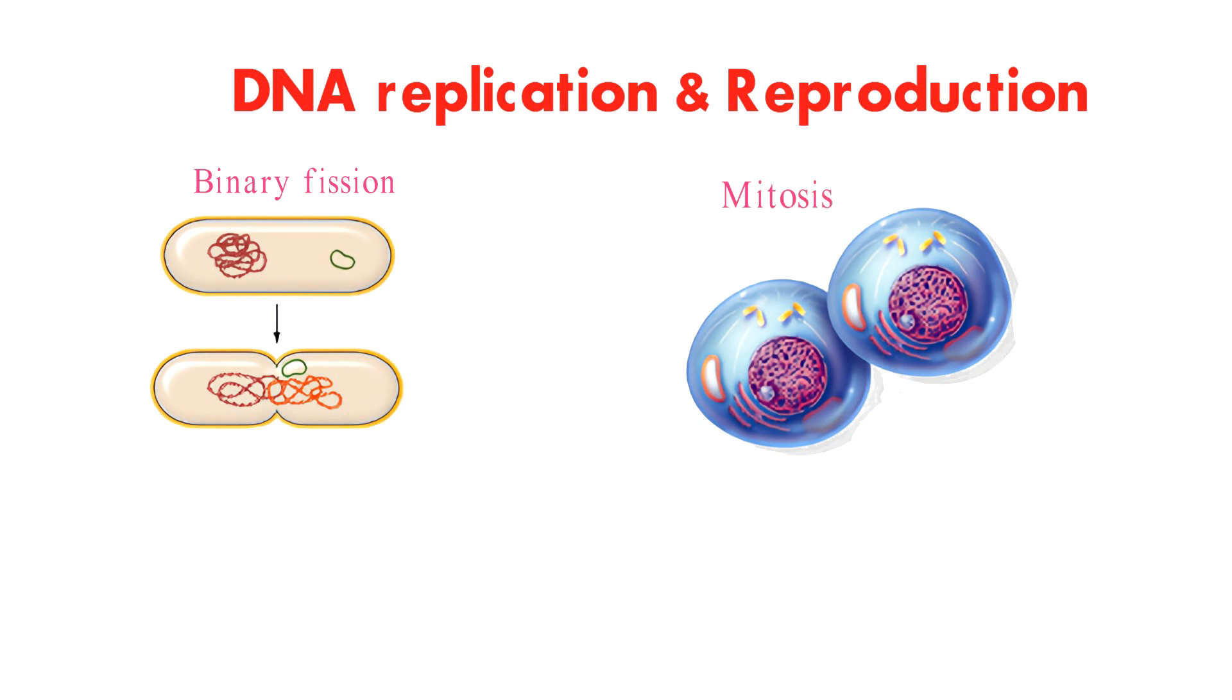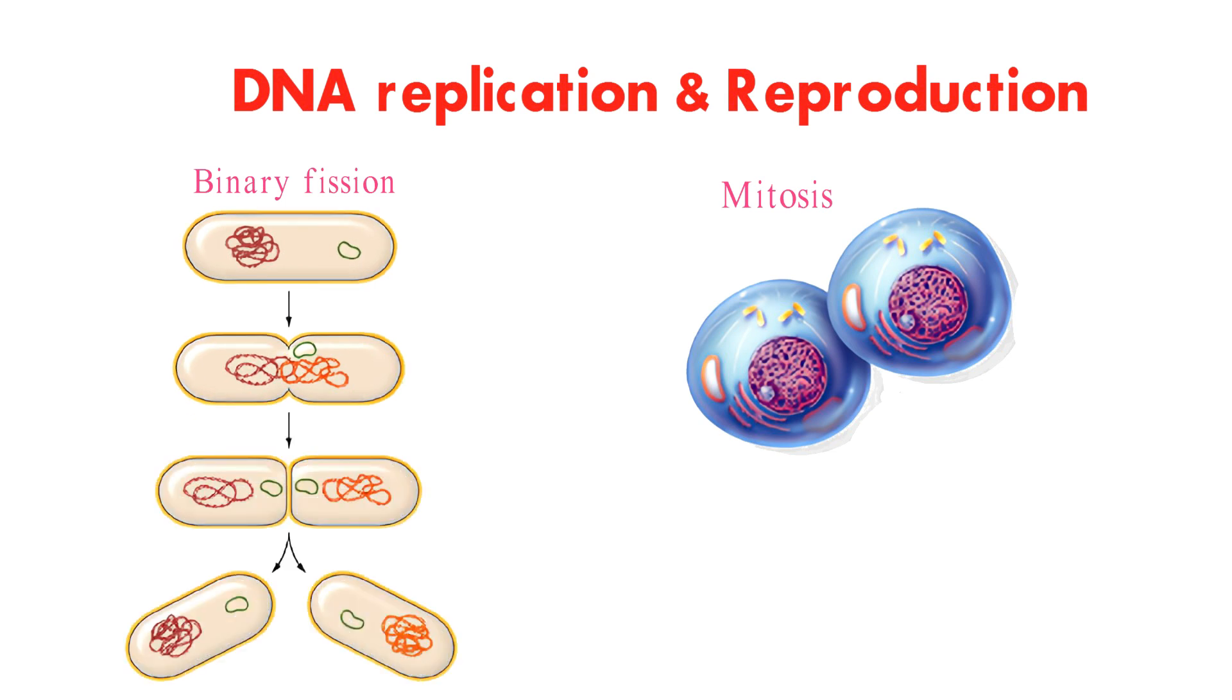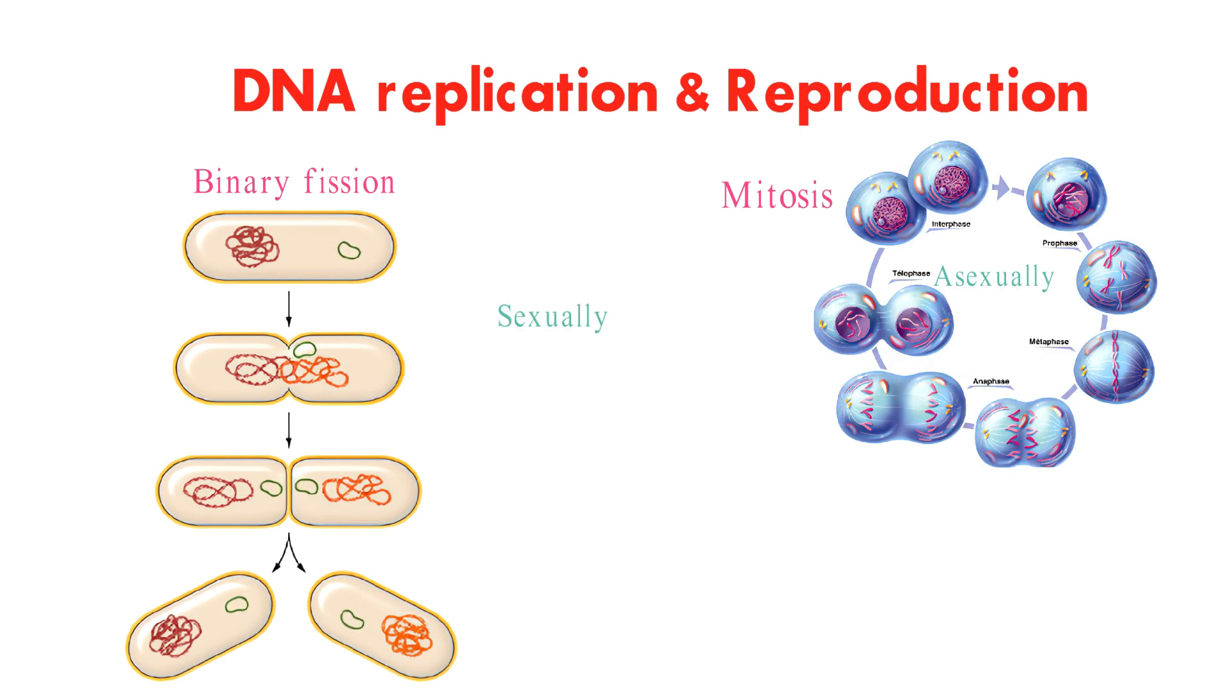Prokaryotic cells reproduce asexually by binary fission. Eukaryotic cells can reproduce asexually by mitosis or sexually by meiosis.